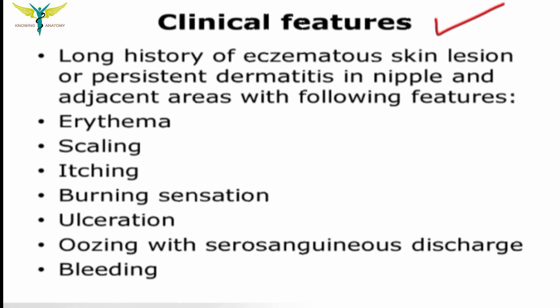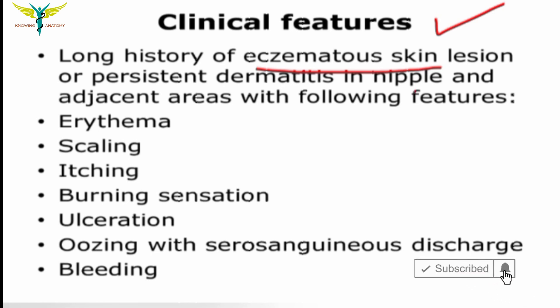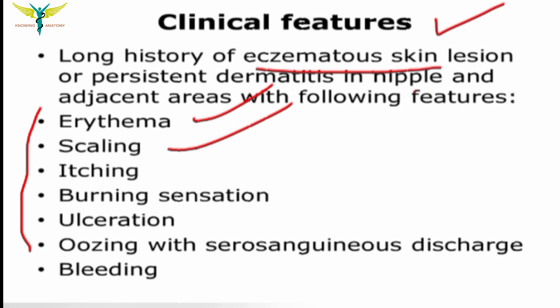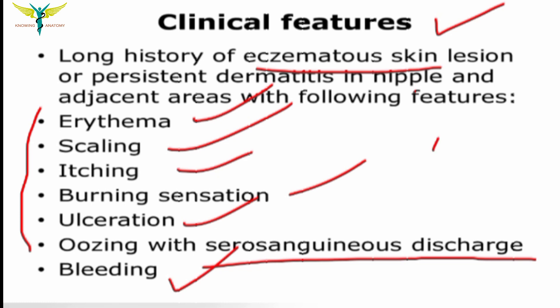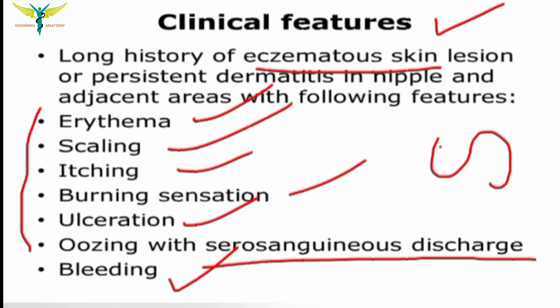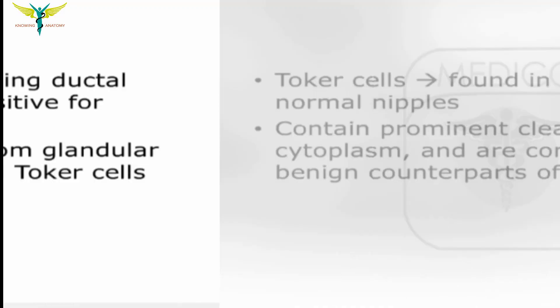The clinical features: if there is a long history of eczematous skin lesions or persistent dermatitis in and around the nipple with the following features, it is most probably a case of Paget's disease. These features include erythema, scaling, itching, burning sensation, ulceration, oozing serosanguinous discharge, and bleeding. In any such case, one should consult a doctor for possible diagnosis and treatment.